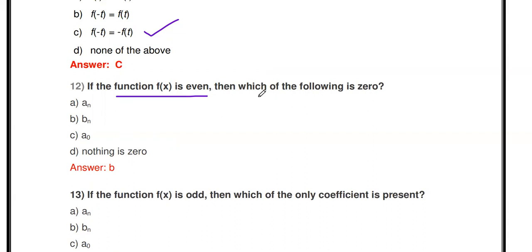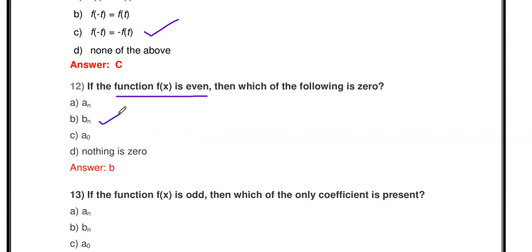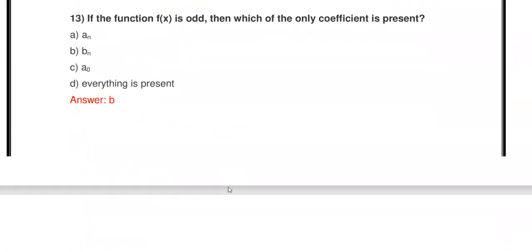Next question: If the function f(x) is even, then which of the following coefficients is zero — aₙ, bₙ, a₀, or nothing? If the function is an even function, the bₙ coefficient is zero. For a trigonometric Fourier Series, if the signal is even, bₙ = 0.